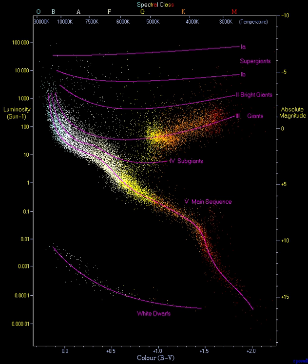In astronomy, the main sequence is a continuous and distinctive band of stars that appears on plots of stellar color versus brightness. These color-magnitude plots are known as Hertzsprung-Russell diagrams after their co-developers, Ejnar Hertzsprung and Henry Norris Russell. Stars on this band are known as main-sequence stars or dwarf stars. These are the most numerous true stars in the universe, and include the Earth's Sun.